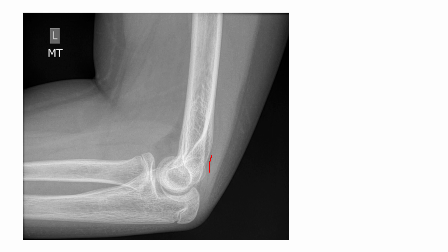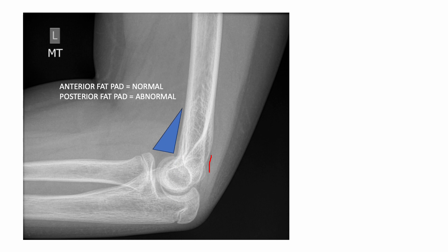Remember guys, these days as obesity is on the rise, an anterior fat pad may be normal for us if we get it anteriorly. But if somebody is having a fat pad at the back, that is pathological. Similarly, anterior fat pad may be normal in the distal arm, but a posterior fat pad is always, always abnormal. But what if the anterior fat pad is triangular, like a sail — that becomes abnormal too. So when you have a posterior fat pad sign or an anterior sail sign, what you need to think of is that there is a supracondylar fracture.